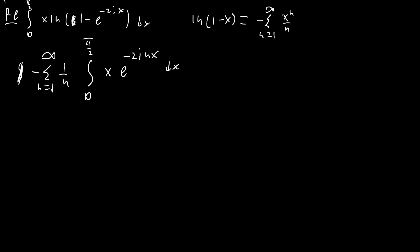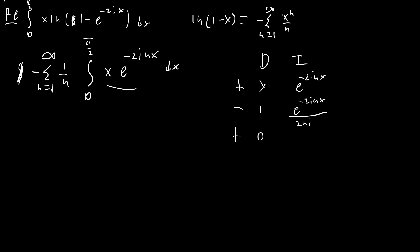This is straightforward integration by parts, so let's make a table using the tabular method. We're going to have x and 1 in one column, and e^(−2inx), then e^(−2inx)/(−2ni), then e^(−2inx)/(−4n²) in the other column.